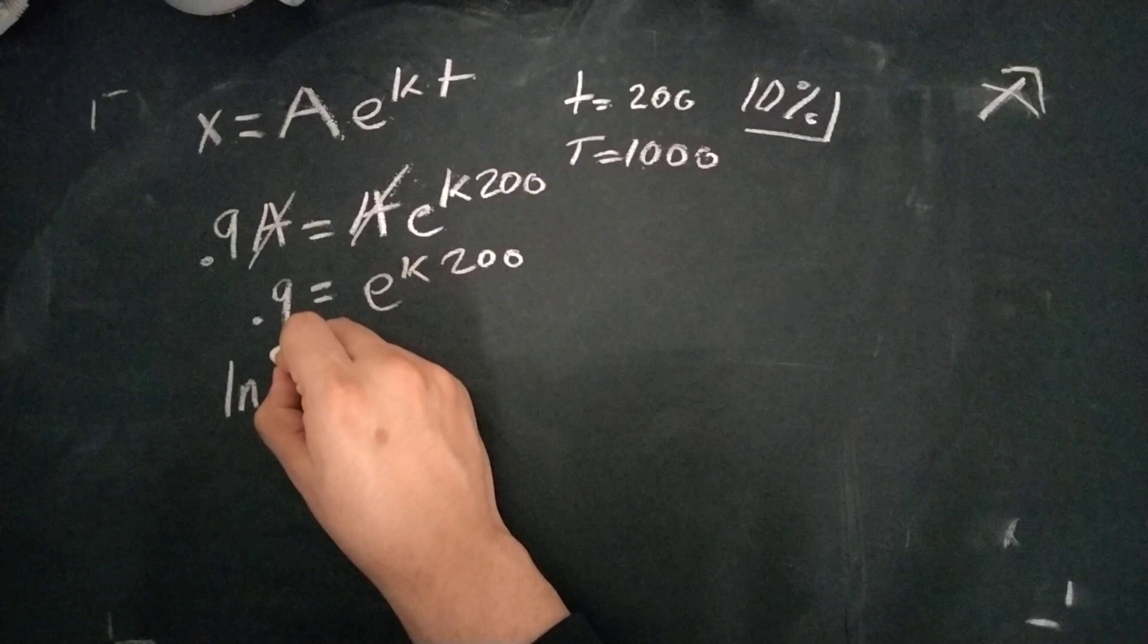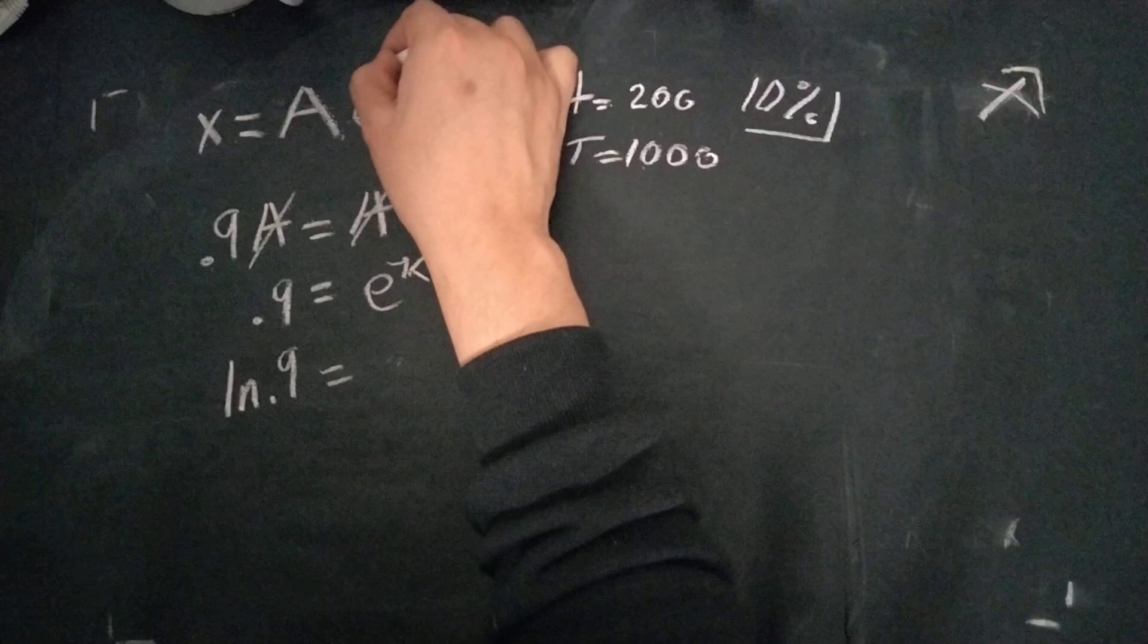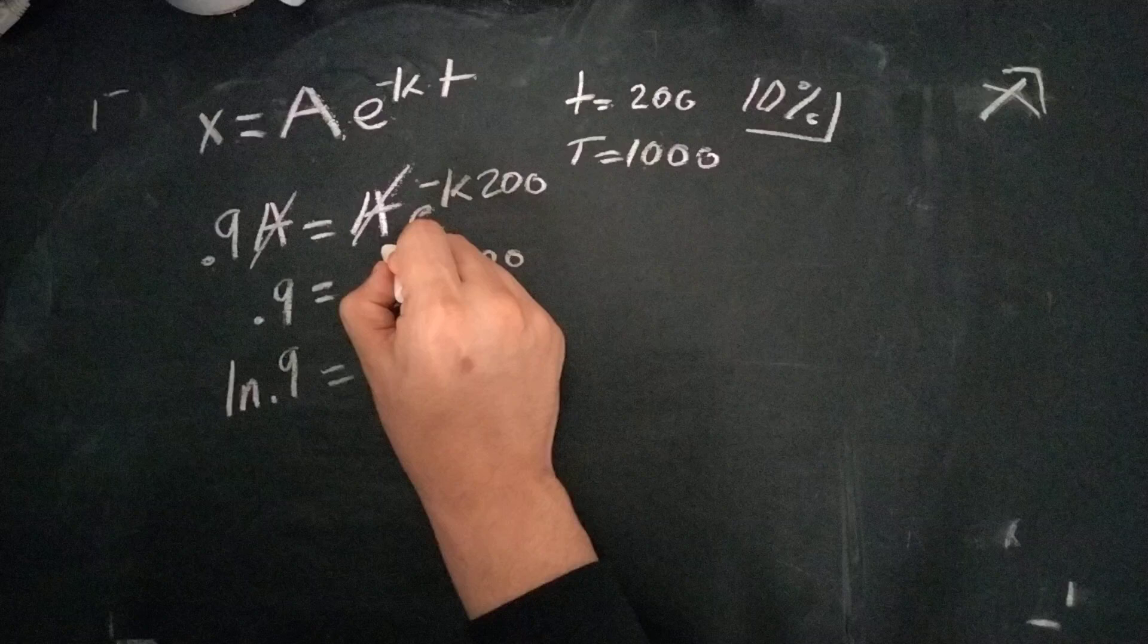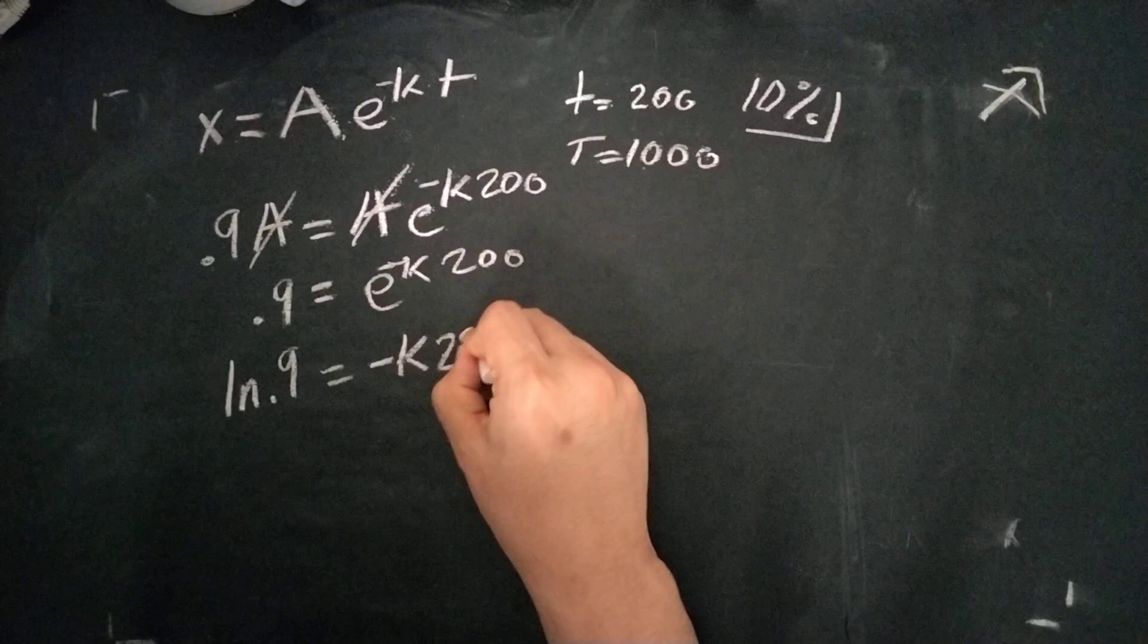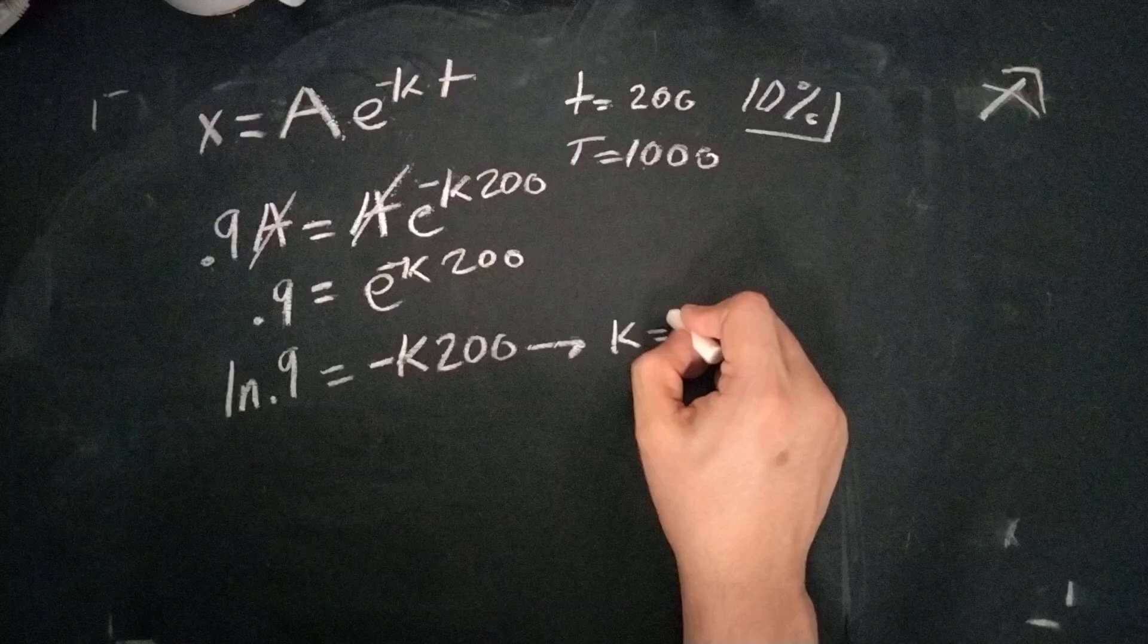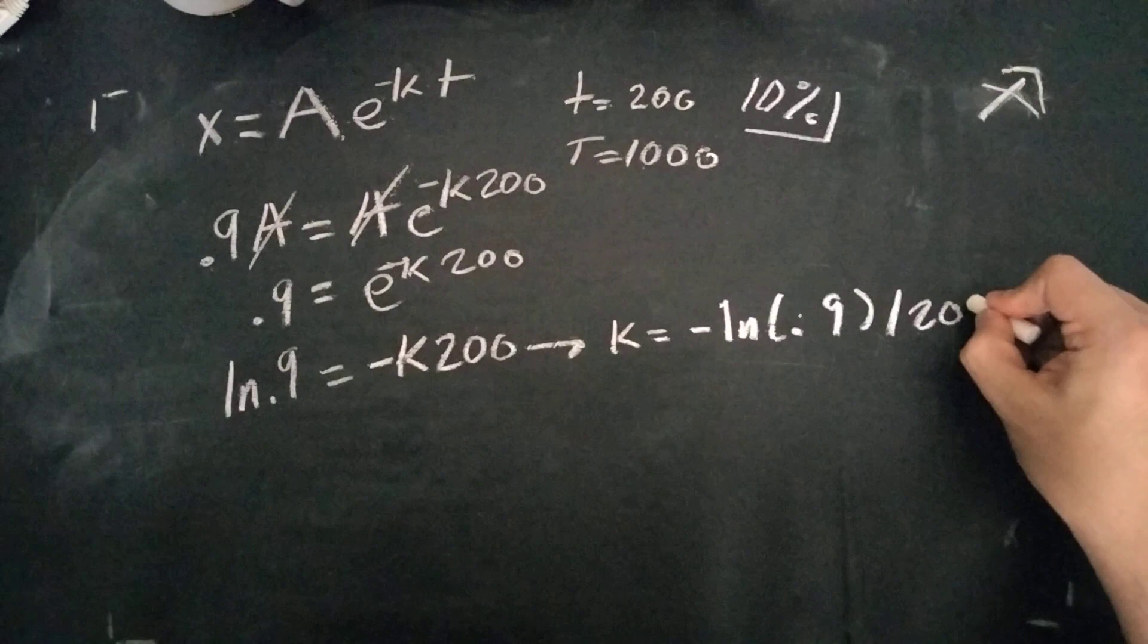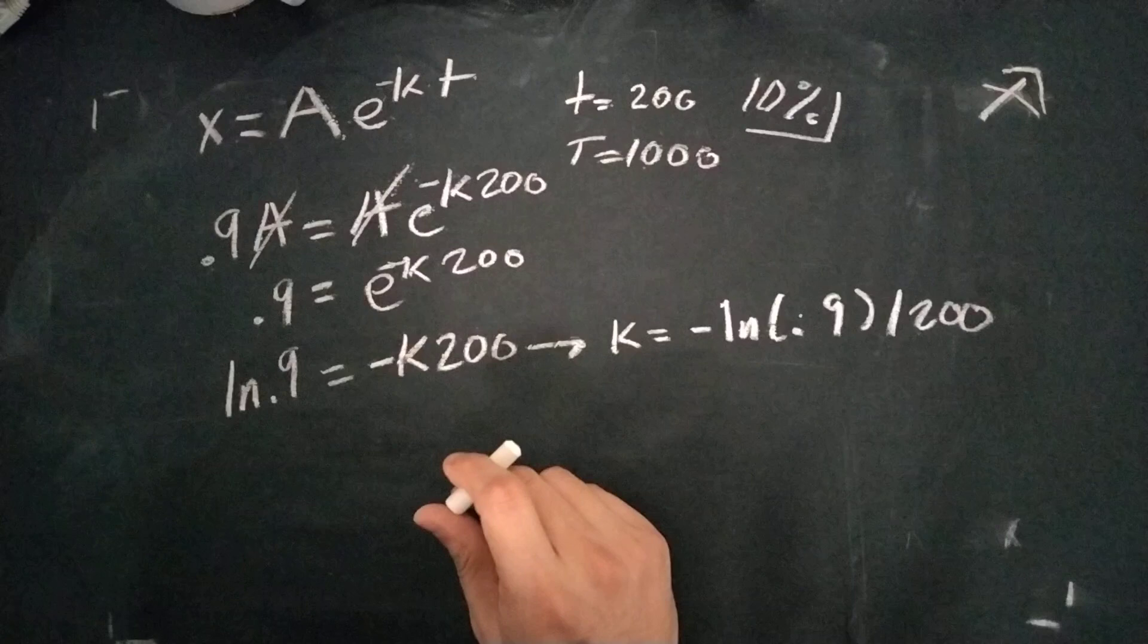So now we have from here, we take the natural logarithm of both sides. Taking the natural log of E just gets rid of it. If I recall, there's a negative here that I forgot to write down. Yes, there's a negative there. So my apologies. So we have a negative K, 200. So we get K is equal to negative natural log 0.9 over 200. I'm just double-checking my work here just to make sure I got it proper.